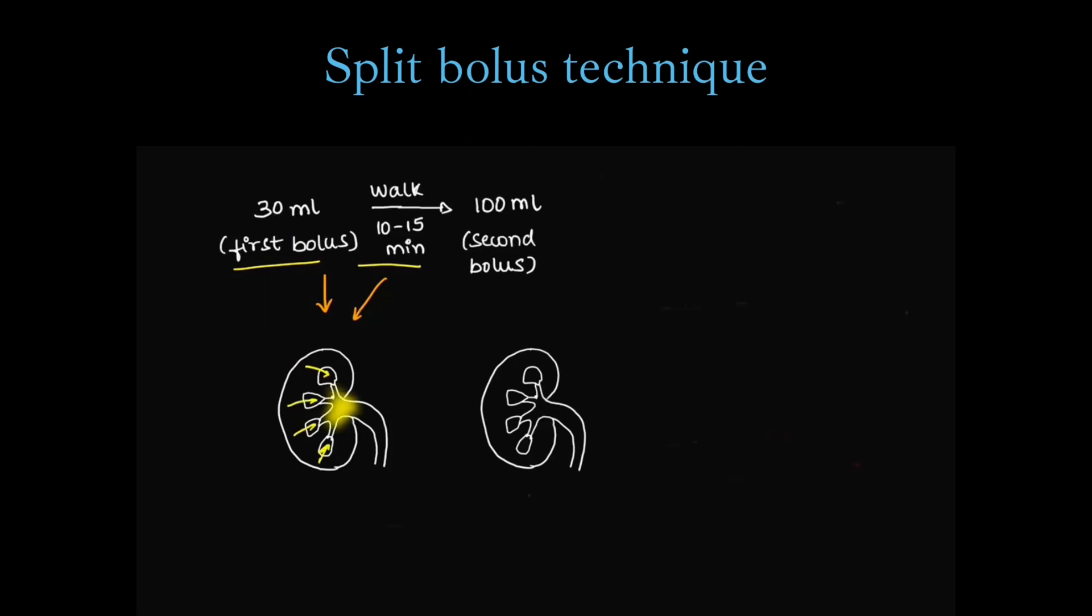How does this technique work? The first 30 ml bolus would have reached the calyceal system. By that time, patient walks. Next, 100 ml which you give will enhance the renal parenchyma. So, finally, all the three structures, cortex, medulla and the urinary tract are enhanced. This is called nephropylographic phase.